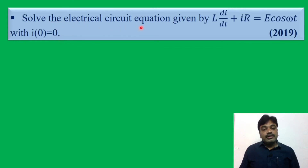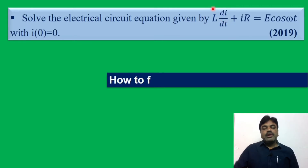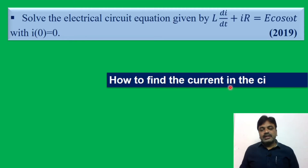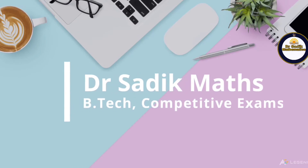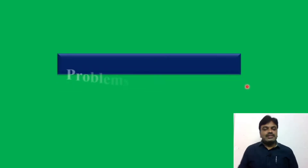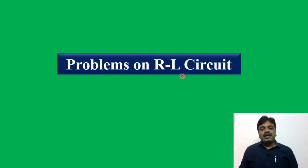Solving the electrical circuit means we are finding the value of I — how to find the current in the circuit. Today we discuss problems on the RL circuit, that is the resistance and inductance circuit. Let us see the problem.